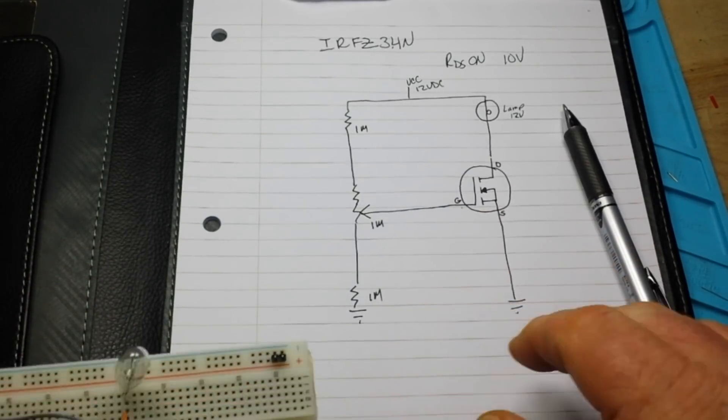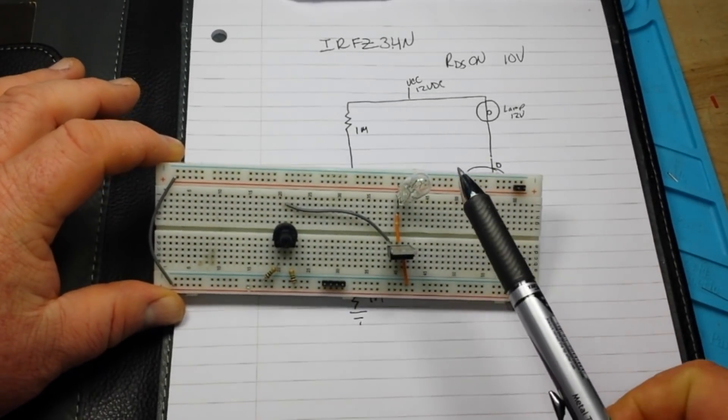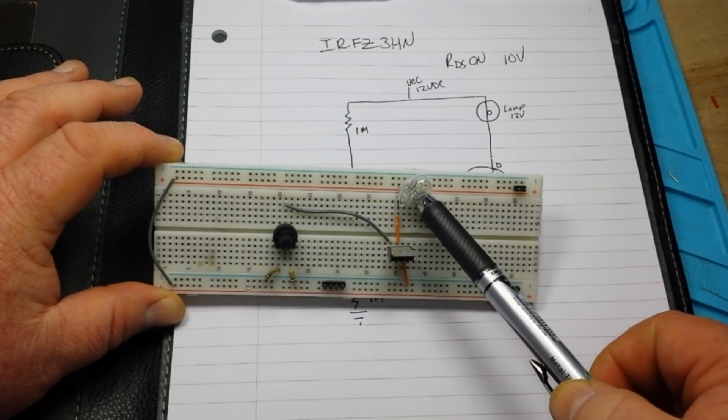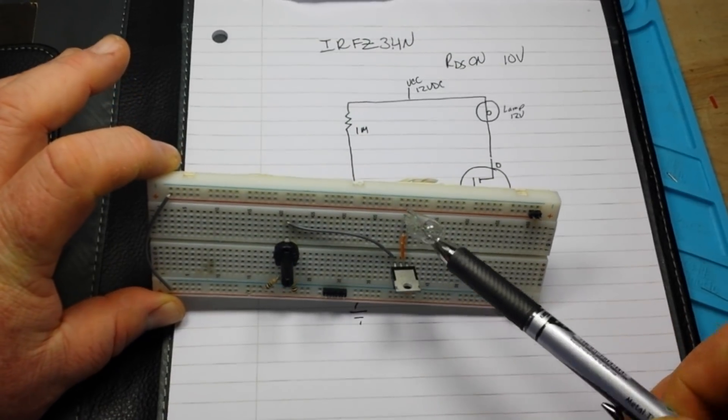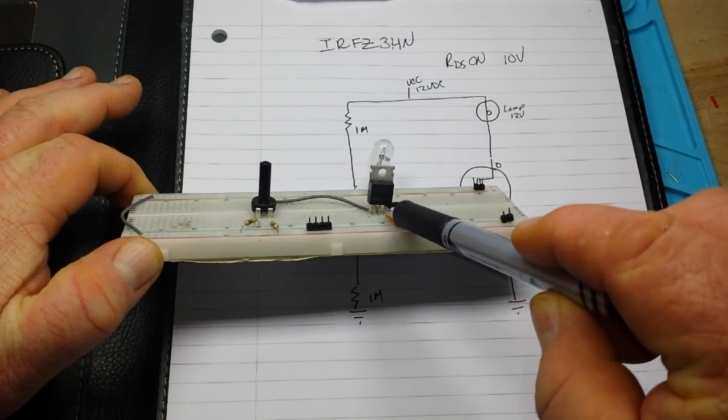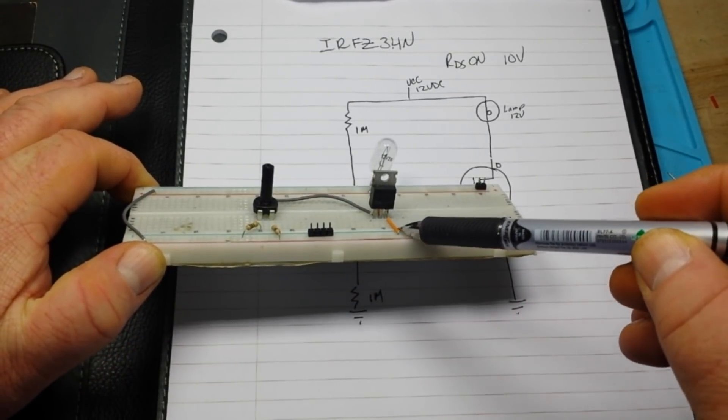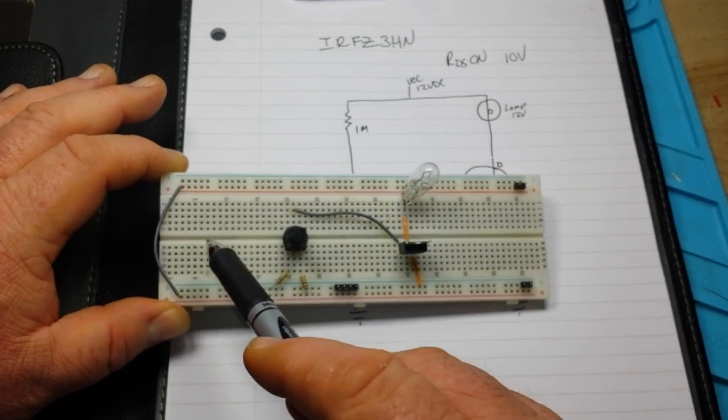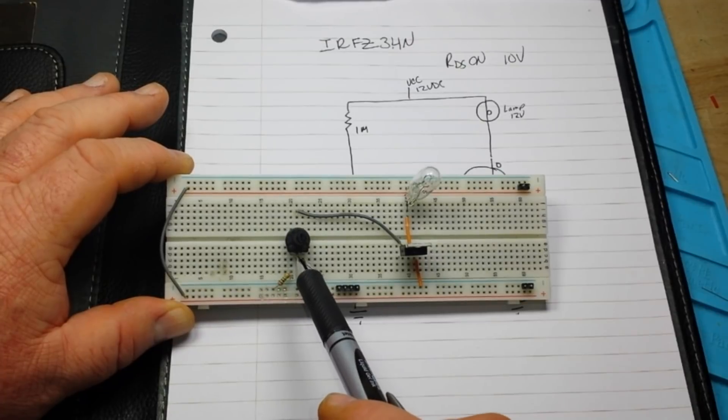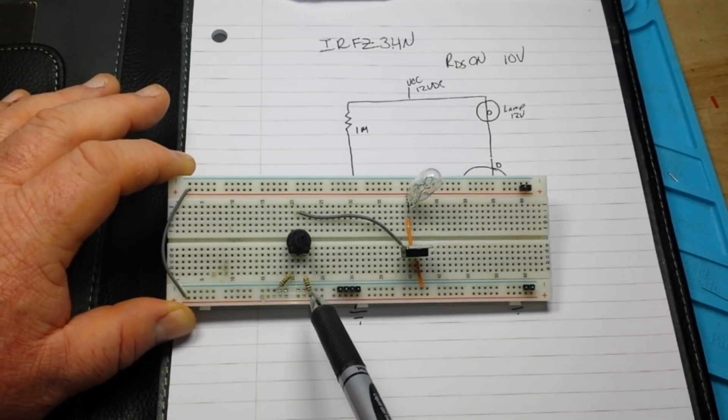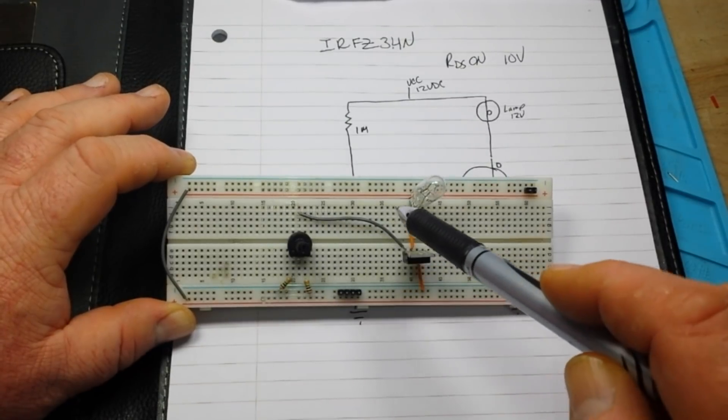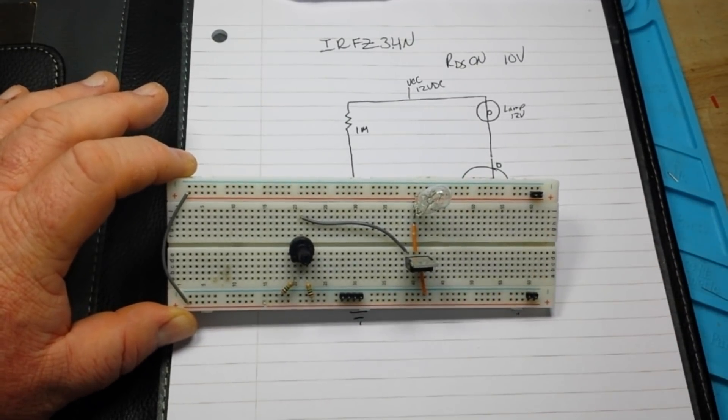So there's the diagram. Here's the circuit. There's our lamp going to VCC that is coming down here into the drain of the MOSFET. This MOSFET is gate, drain source. There's our source going out to ground. We have our VCC brought down here as well. We have a one meg pot, a couple of one meg resistors. And the trimmer goes over to the gate.